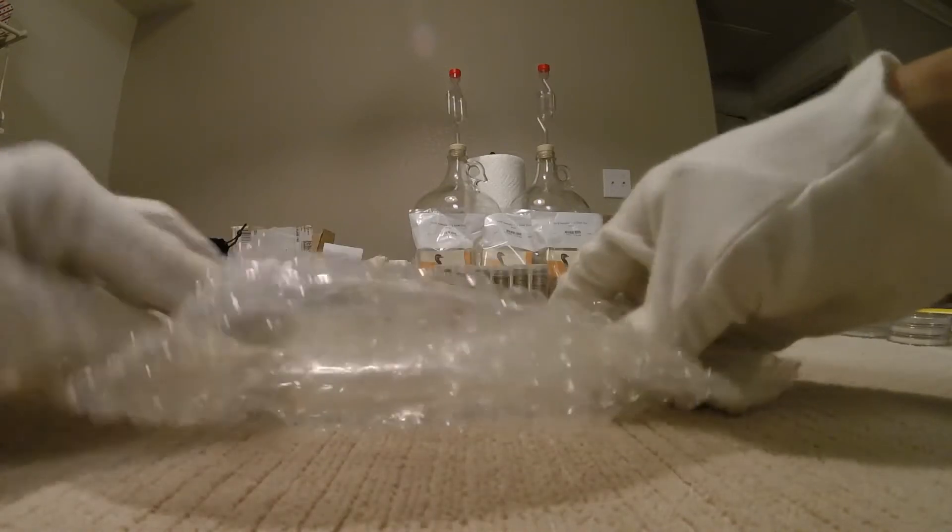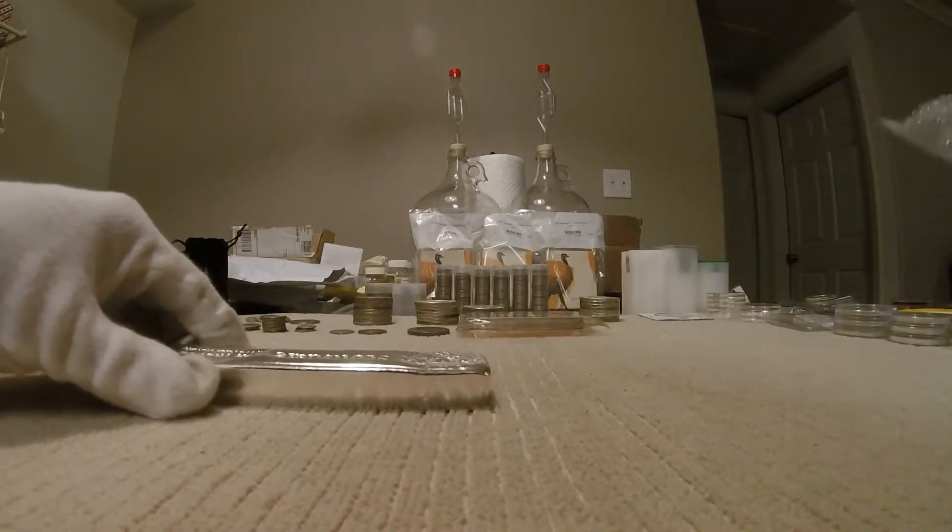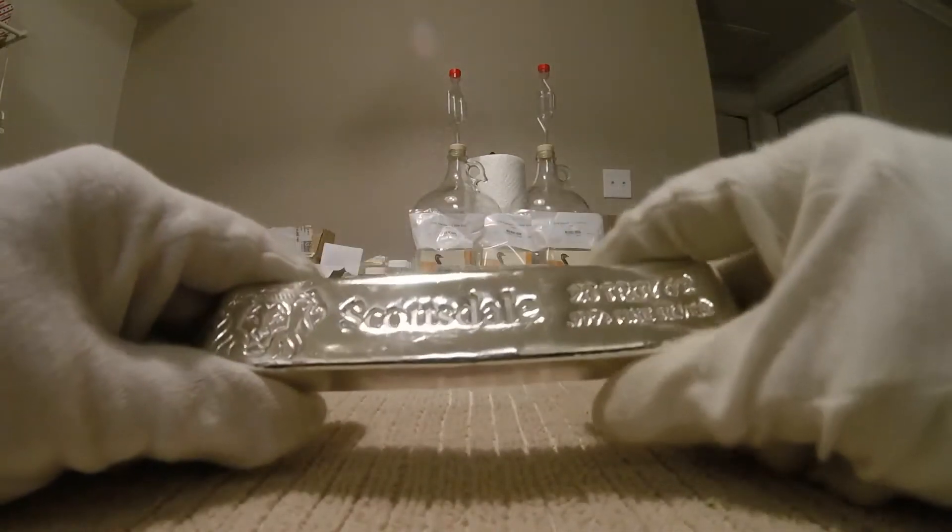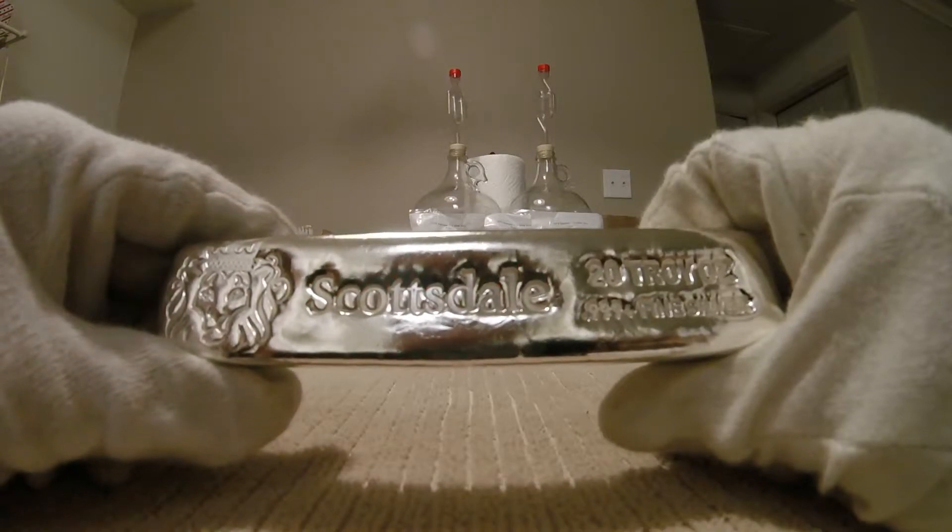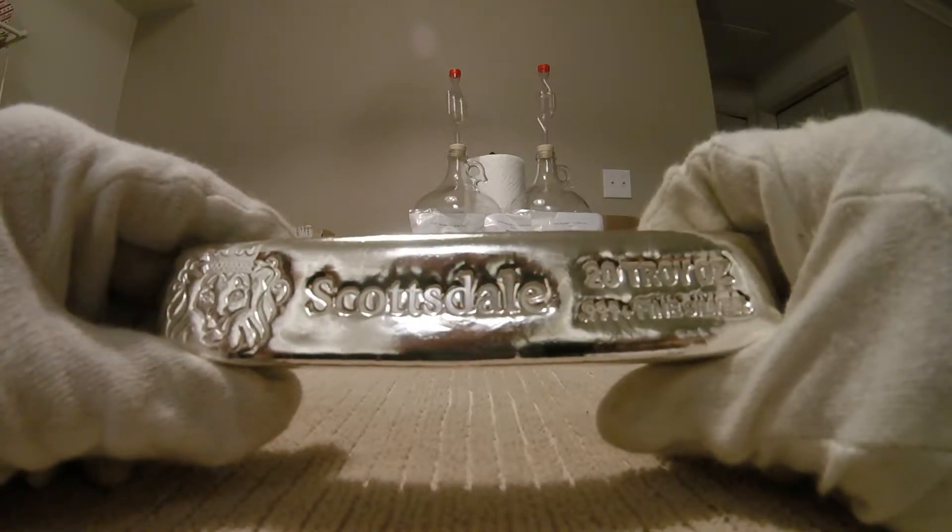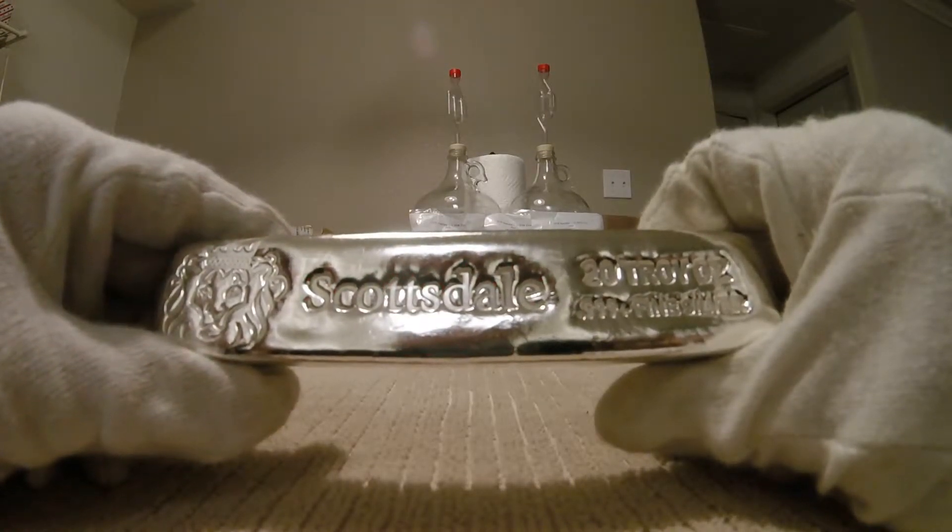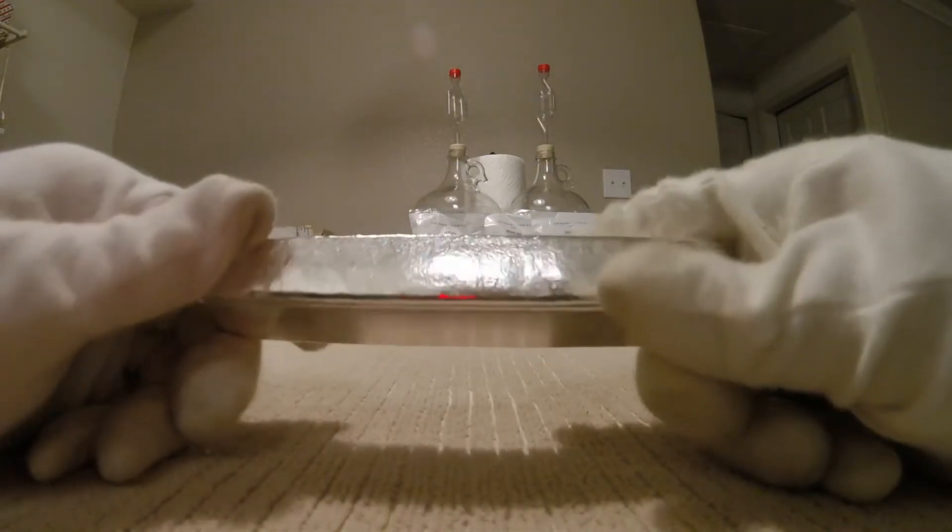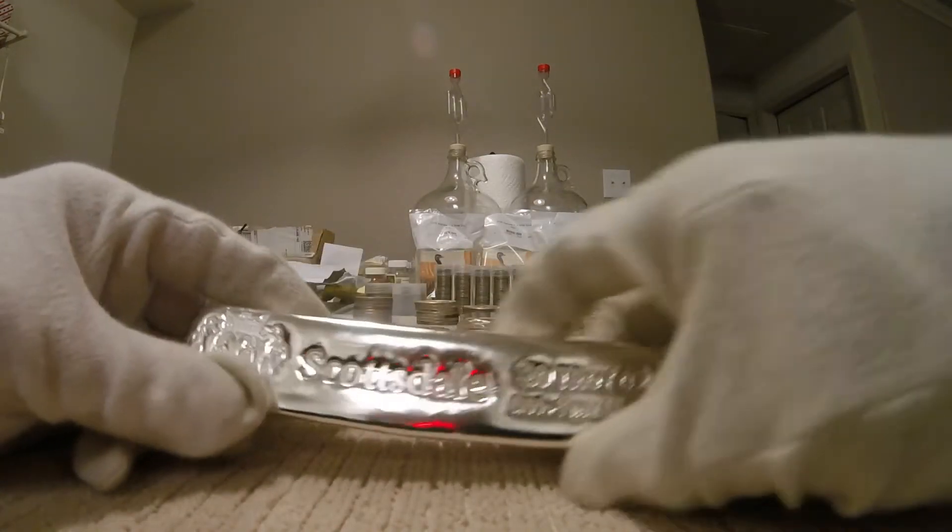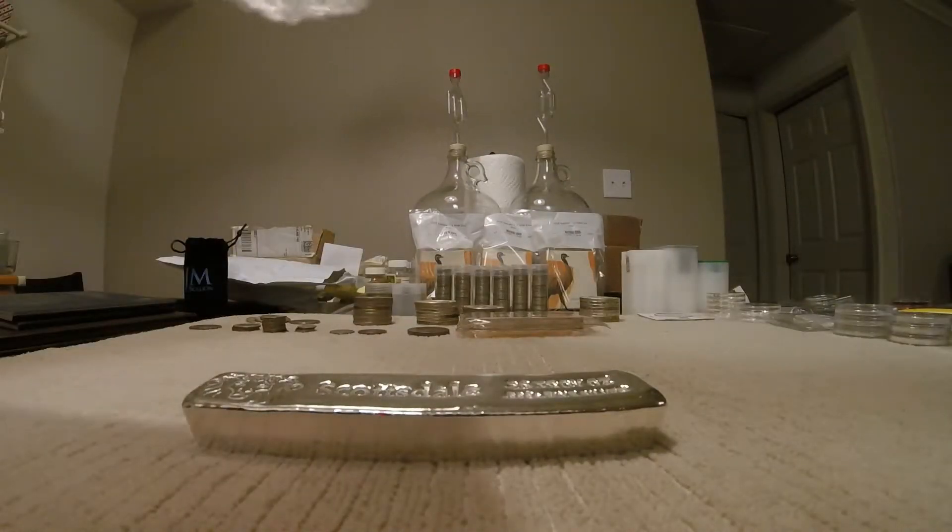Next I have the twenty ounce Scottsdale Kit Kat bar. This is on alert by Silver Stacking Nerd. Picked this up at I believe it's a buck twenty-five per ounce over spot with free shipping. Very nice pickup. Glad I got one. That's twenty ounces right there.